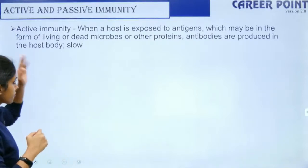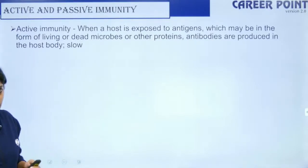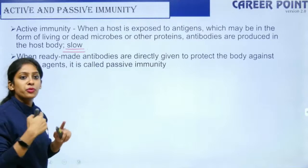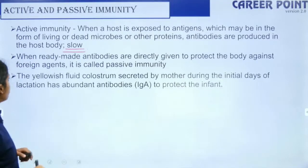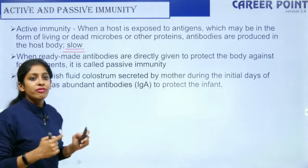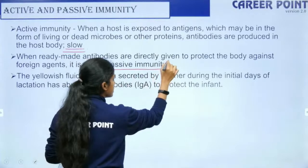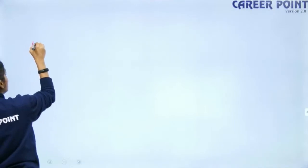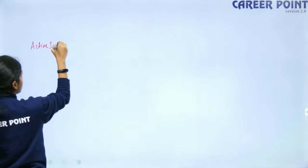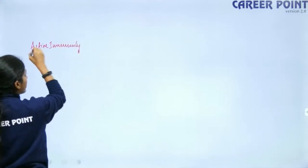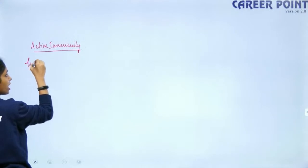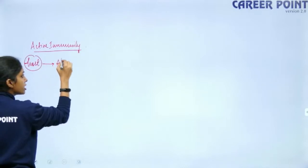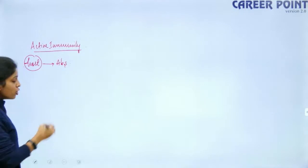Active immunity is a slow process because it takes time for B lymphocytes to multiply and produce antibodies. When ready-made antibodies are directly given to protect the body, that is passive immunity.